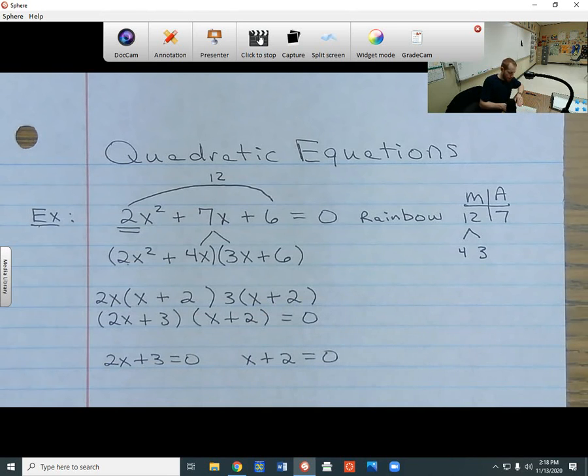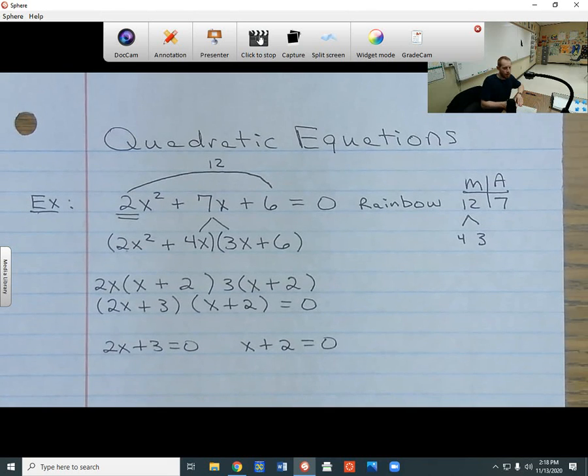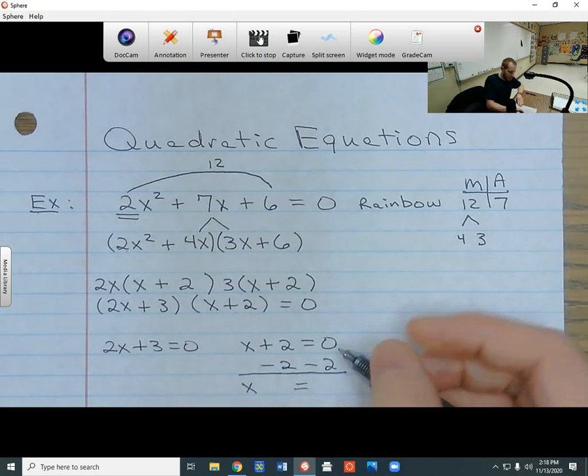So the easiest one to solve would be the x plus 2 equals 0. What I can do with that one is I can subtract 2 from both sides to get the x by itself on the left side. And then over here, I have 0 minus 2 is negative 2.